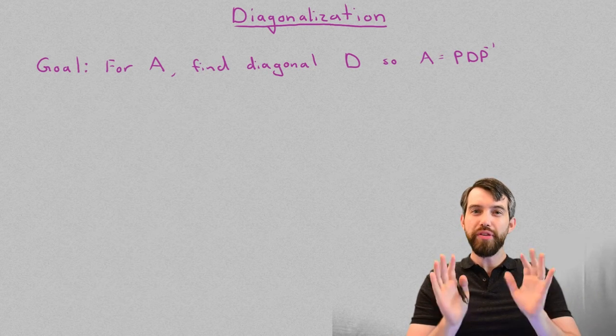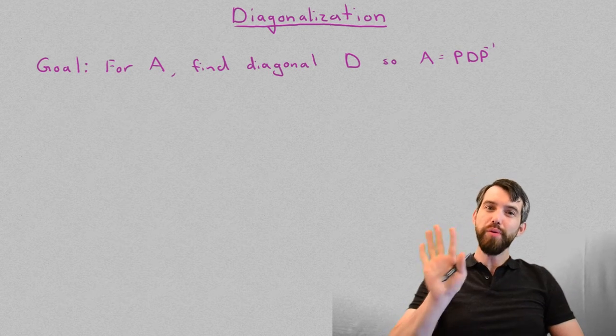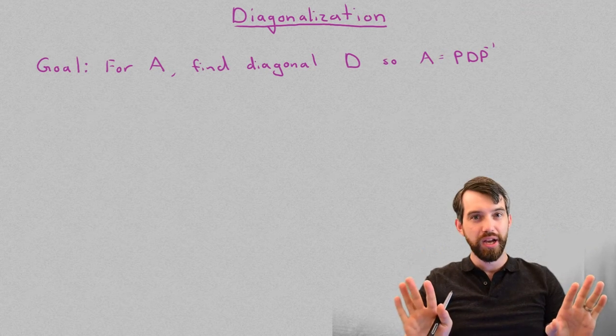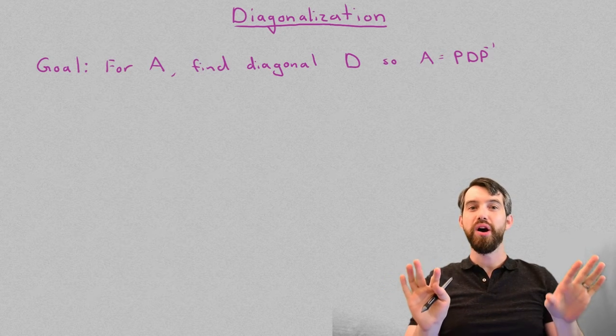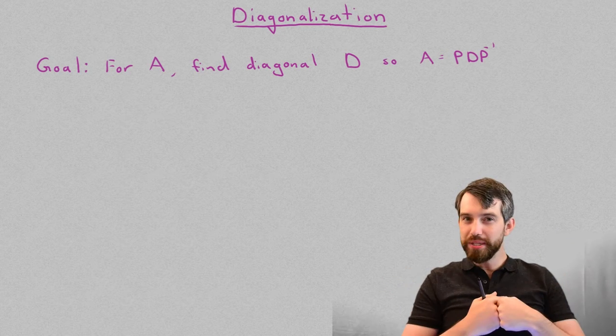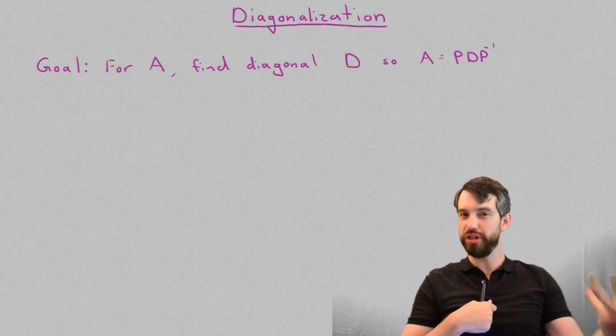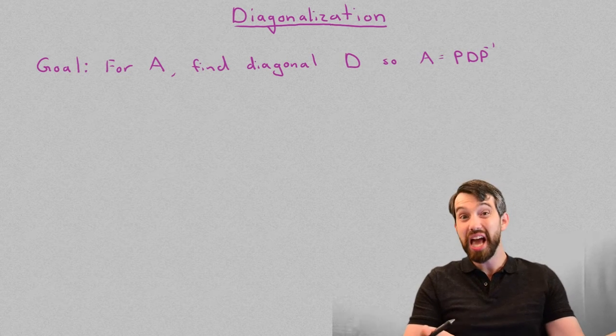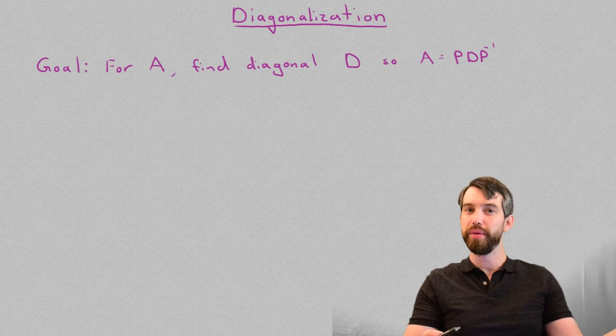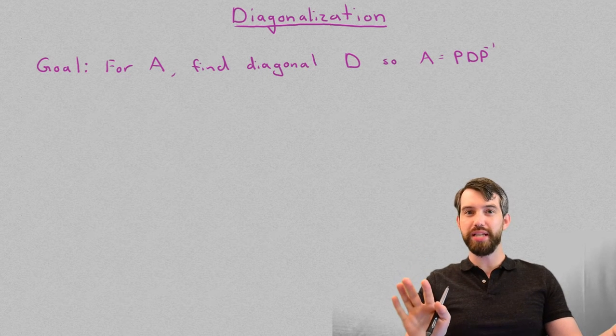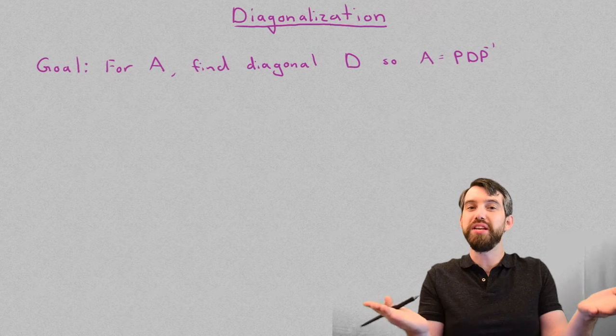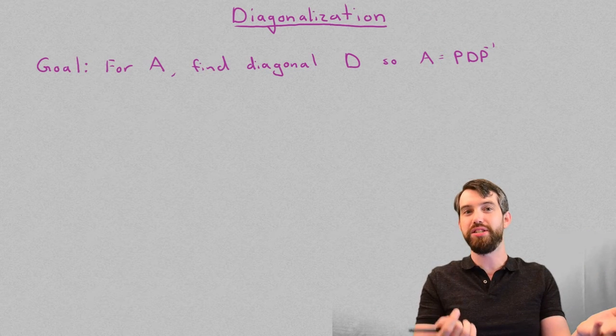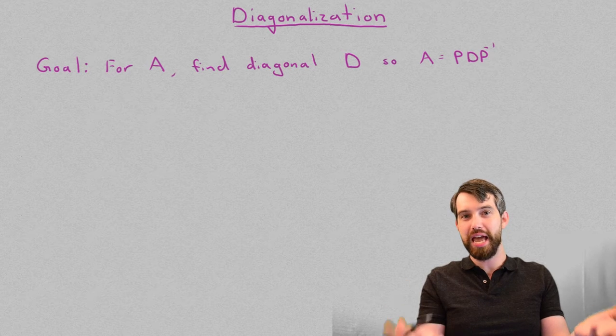So how about this for a process? If I start with the matrix A, I want to find a diagonal matrix D where A and D are similar. And then the hope is going to be that I'll do all my computations on the diagonal matrix, because diagonal matrices are really nice and you can do computations easily on them. And then for the original matrix A, you can use the property of similarity to translate this information from the easy diagonal case to the complicated matrix A case.